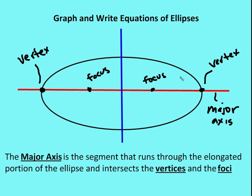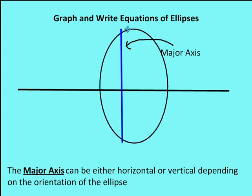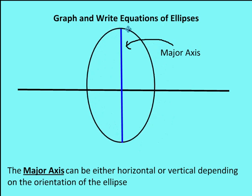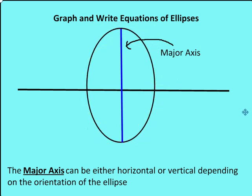The major axis divides the ellipse into two symmetrical halves — one with the major axis and the other with the minor axis. Remember that the foci are always going to be on the major axis and not on the minor axis. The major axis can be either horizontal or vertical depending on the orientation of the ellipse. So the major axis is not always horizontal and not always vertical — it depends on the orientation of the ellipse.